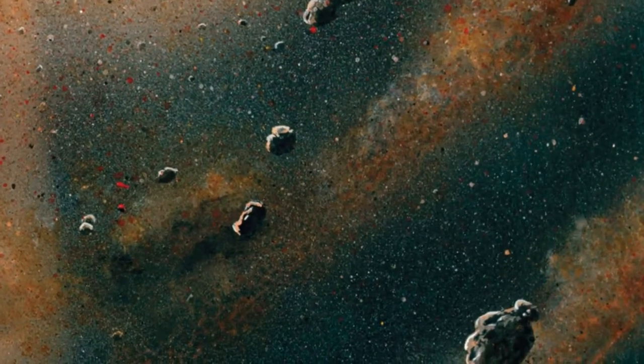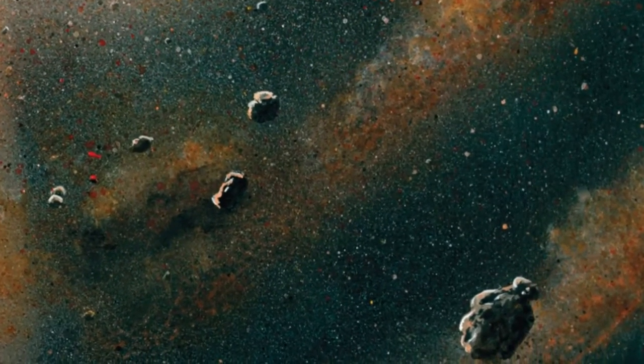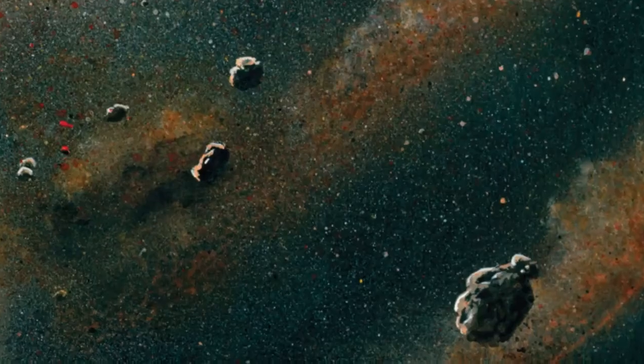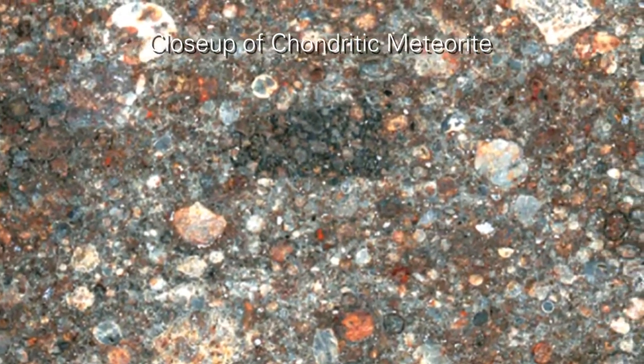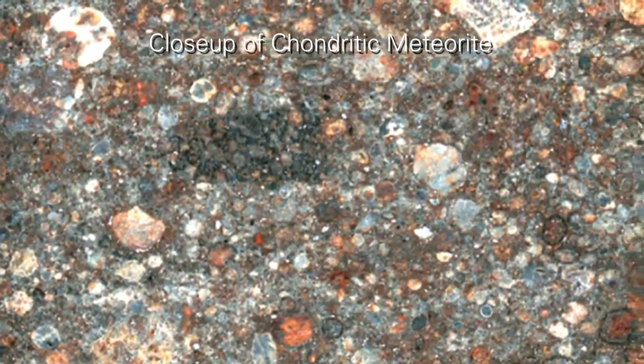A rare kind of meteorite, called a chondritic meteorite, may show us what one of these planetesimals looked like inside. It looks like clots of matter stuck together.